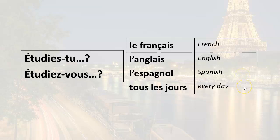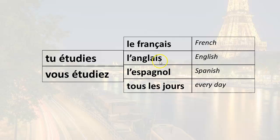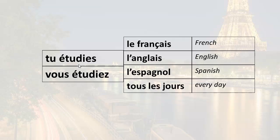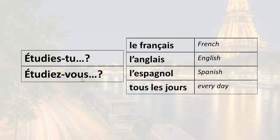Let's briefly recap. Remember, to ask a question, simply reverse the word order of the subject pronoun and the verb. So tu étudie becomes étudie-tu, and vous étudiez becomes étudiez-vous.